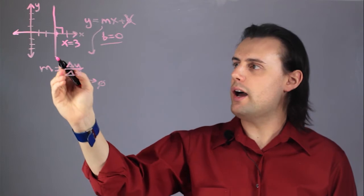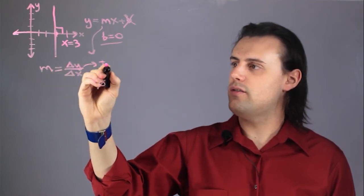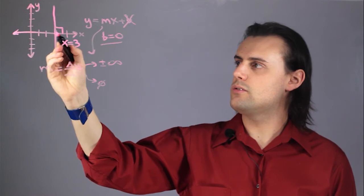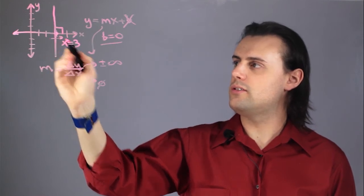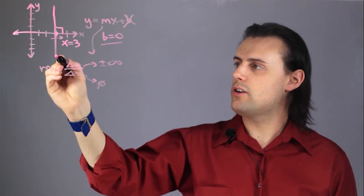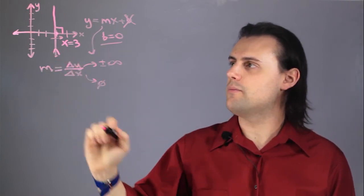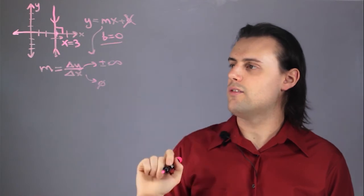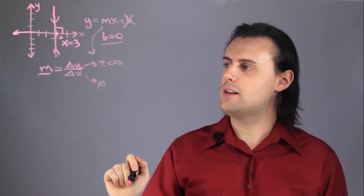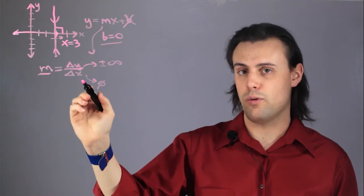The change in y will either be positive or negative infinity, because as you try to go across this vertical curve, you're either going to be going from negative to positive infinity, or from positive to negative infinity. So the slope doesn't really exist, or at least it isn't well defined.